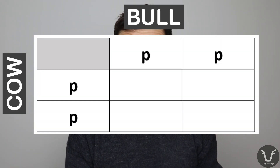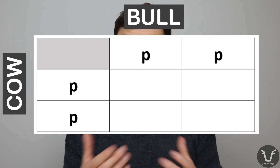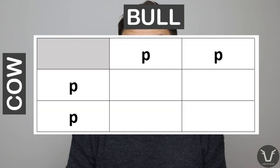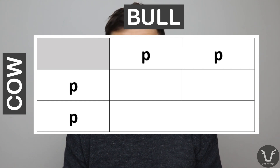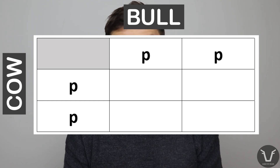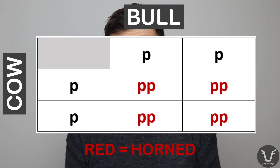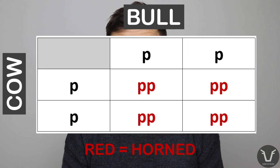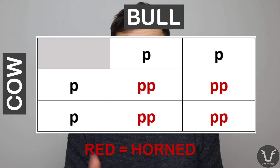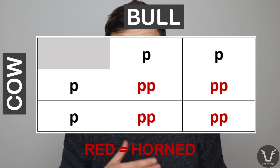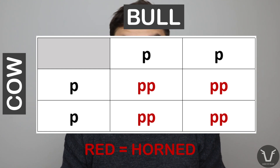Those heterozygous calves, although they'll be polled themselves, remain carriers of that non-polled gene, so they retain their potential to generate horned calves. Let's go for another example: we put a horned bull over a horned cow. Because we know that the little p is recessive, for an animal to have horns it can only have copies of that lowercase p — if a capital P were present that animal would be polled. So a horned bull is going to be lowercase p lowercase p, and a horned cow likewise. As you can see, all the offspring have horns because all of them are lowercase p lowercase p. The genotype of these animals is all homozygous non-polled and therefore their phenotype is for all calves to be horned.